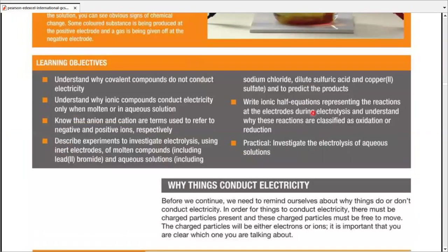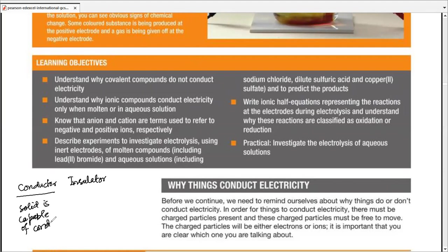You may be familiar with the words conductor and insulator. In chemistry, these terms are used primarily for solids. If a solid is capable of conducting electricity, we call it a conductor; if it's incapable, we call it an insulator.